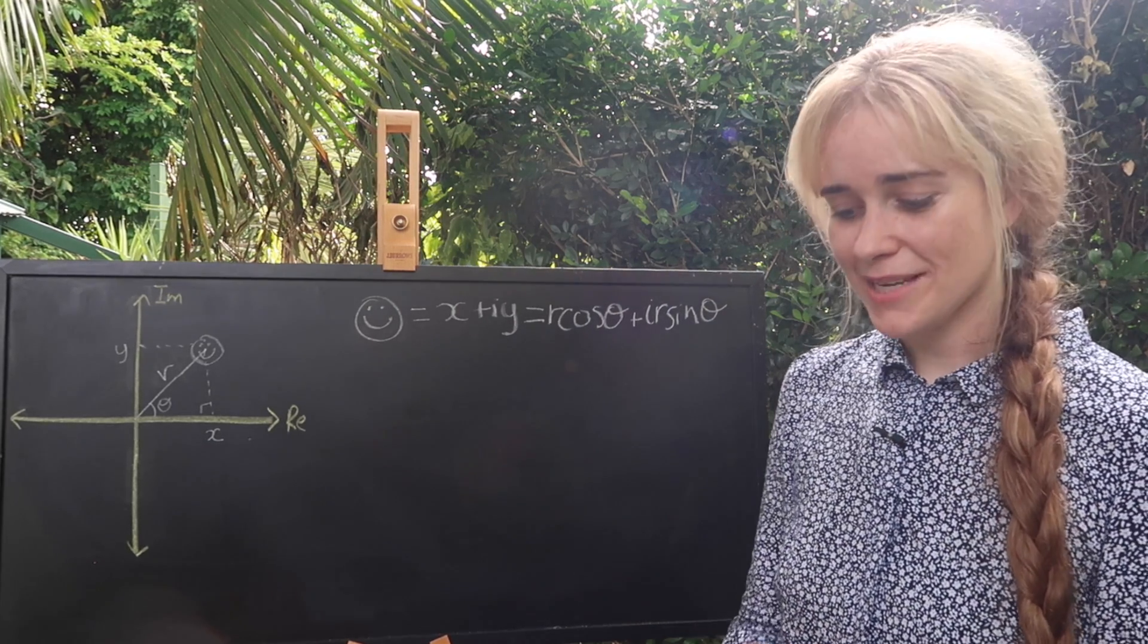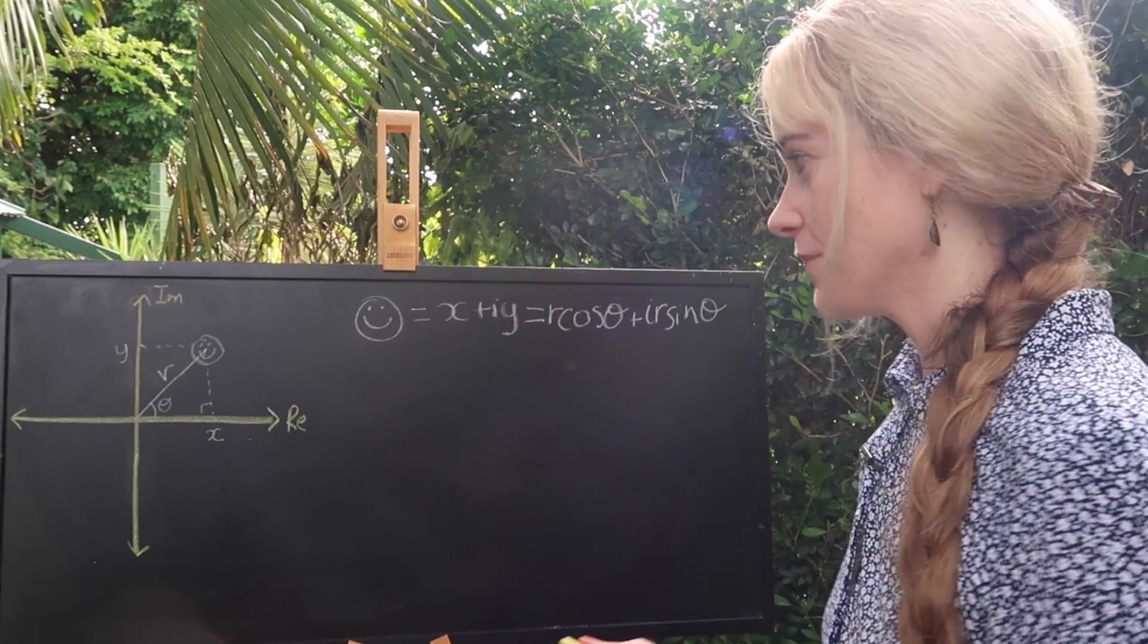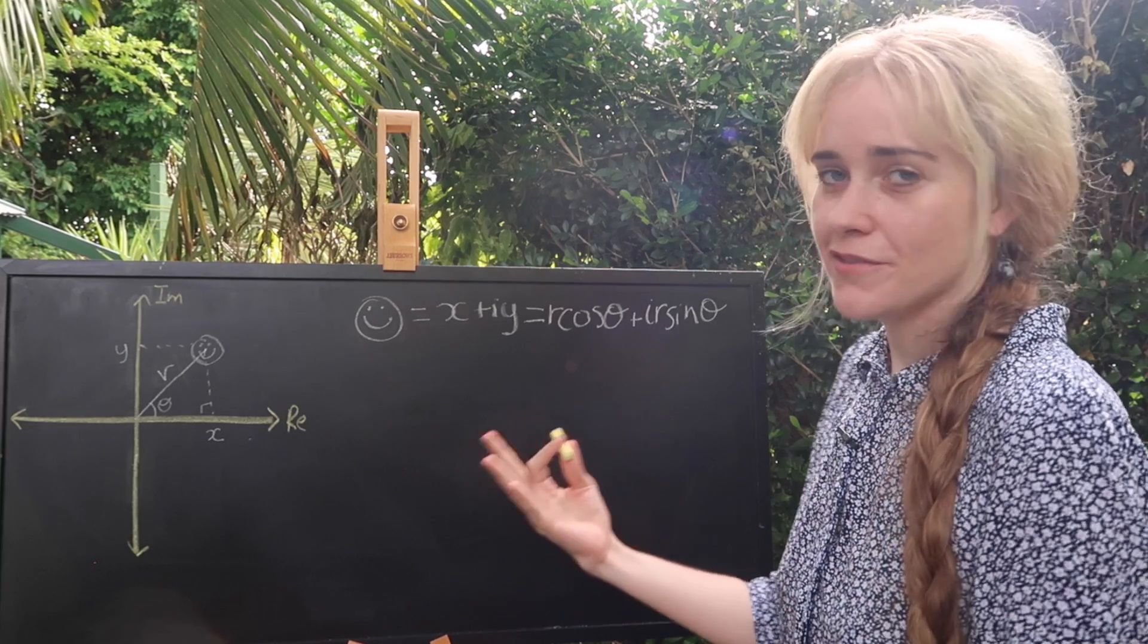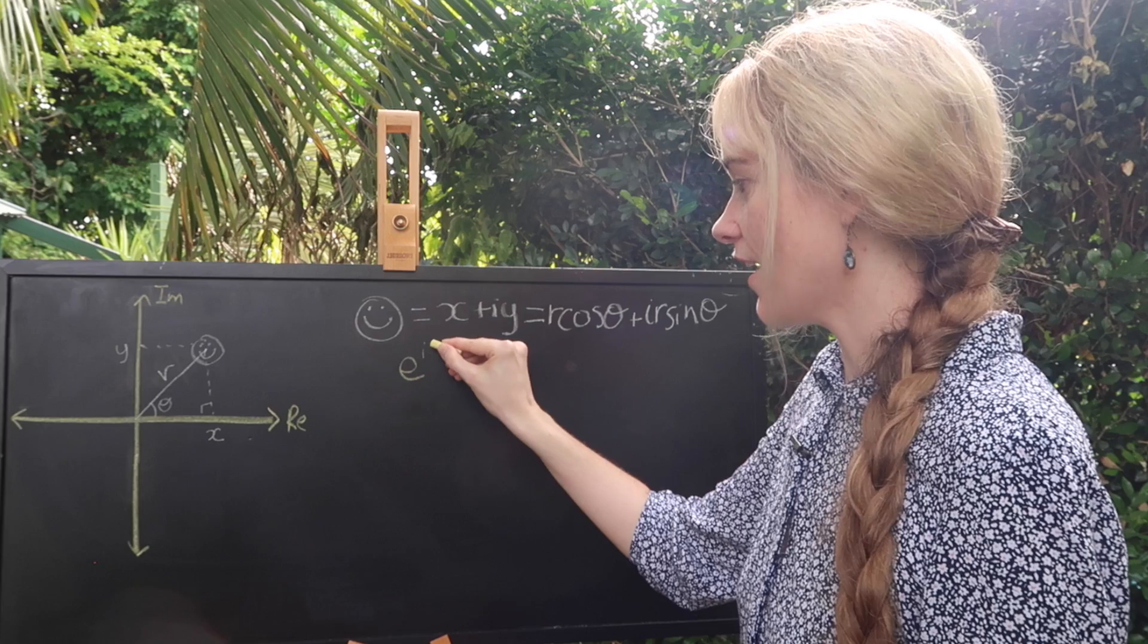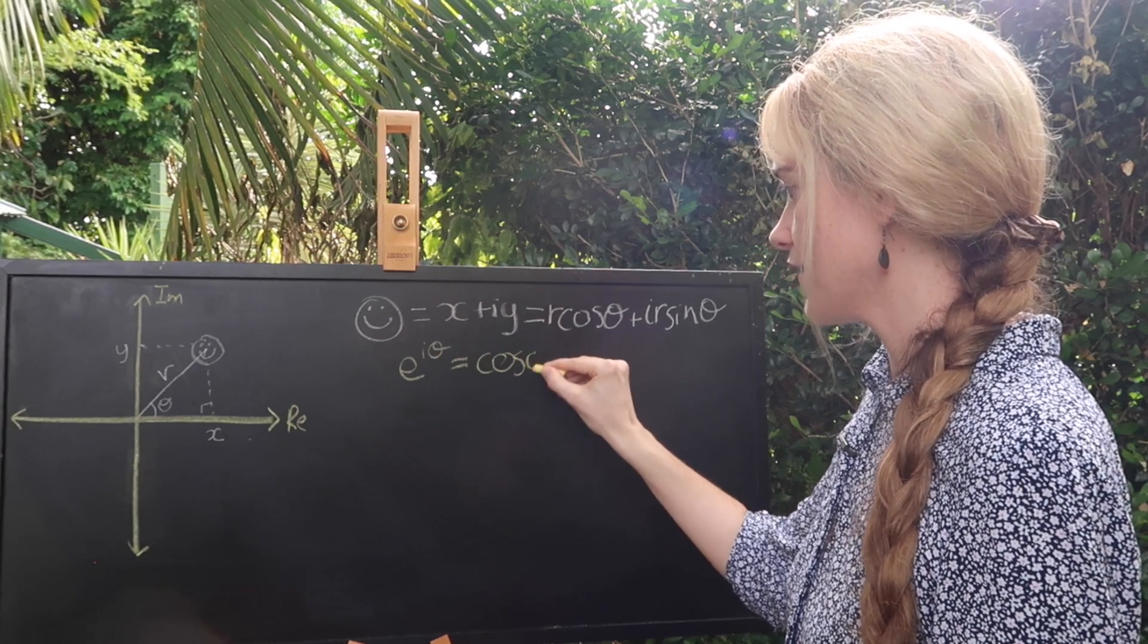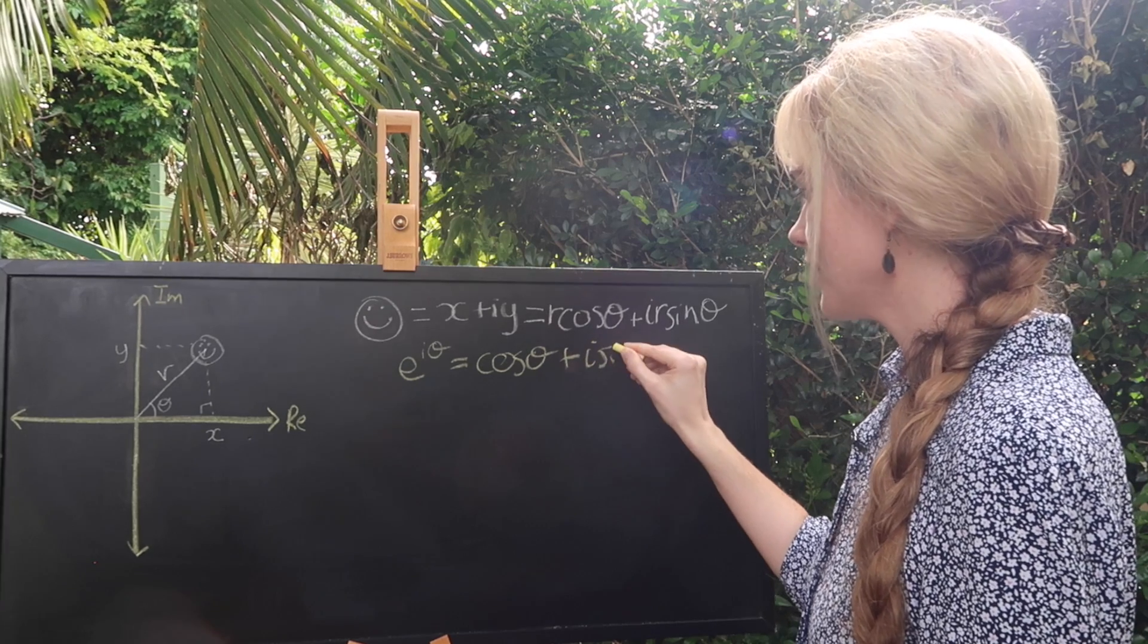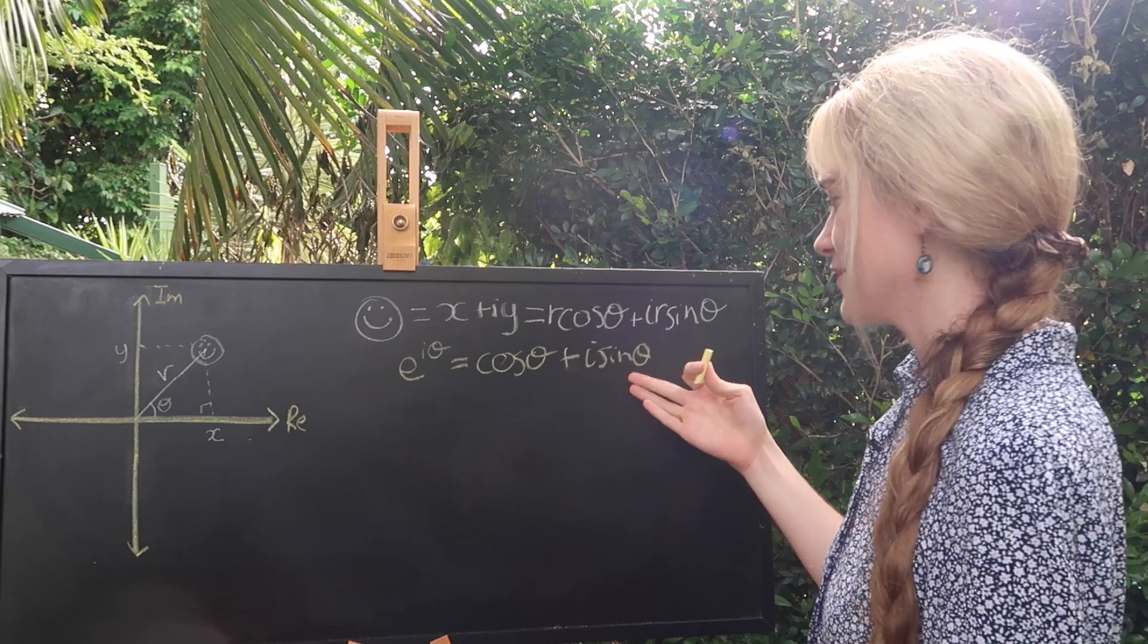Now if you've seen my first joy of mathematics video you may remember something called Euler's formula and it was a very beautiful expression. I'll remind you of it here. It is e to the i theta is equal to cosine theta plus i sine theta. Now you may see that we're dealing with this already.